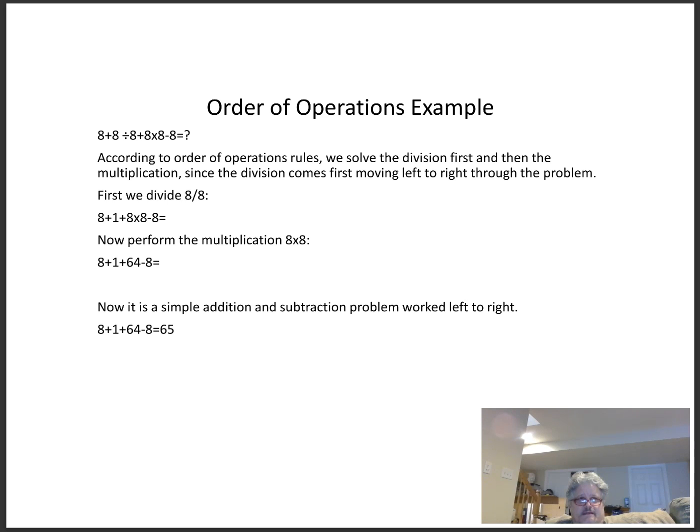Once again, it's 8+8÷8+8×8-8. According to order of operations rules, we're going to solve the division first and then the multiplication, and that's because the division comes first when we're moving left to right through the problem. So the first thing we're going to do is divide 8 by 8. 8÷8 is equal to 1. Now we replace the 8÷8 with a 1, so we have 8+1+8×8-8.